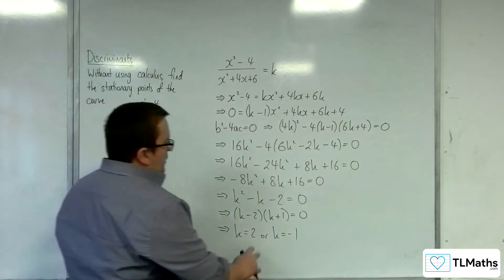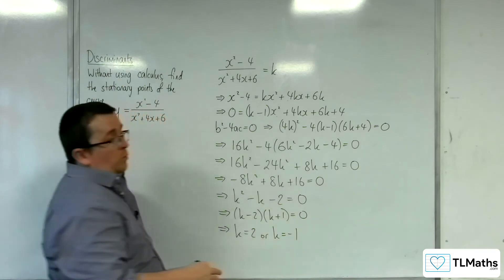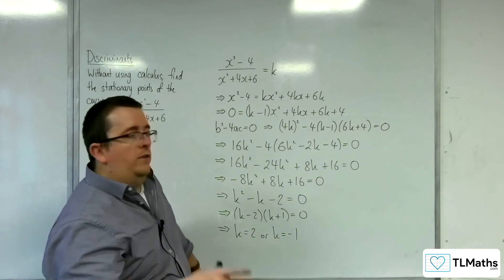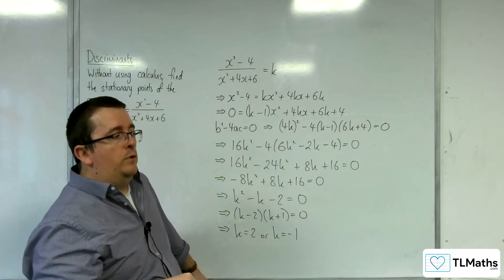So these are your y-coordinates. So 2 and minus 1 are the y-coordinates of your stationary points.